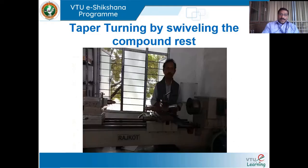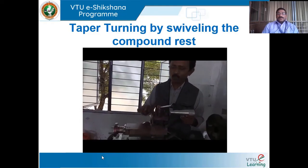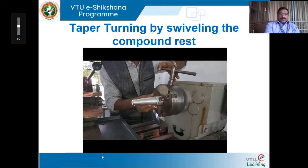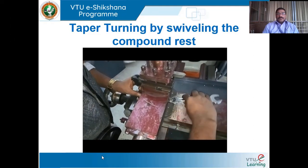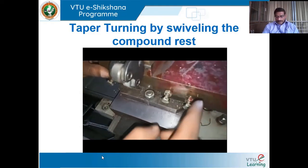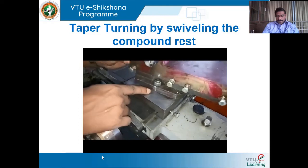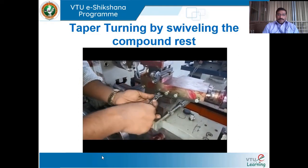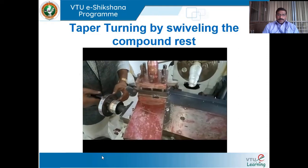Here is the explanation of the swiveling compound rest taper turning method on a specimen. Loosen the compound rest screws, take the compound rest angle to the desired value — for example, 20 degrees — and tighten the screws. This method is limited to turning short tapers.